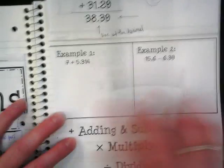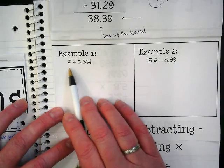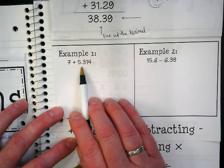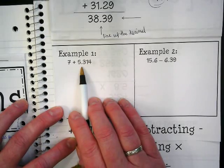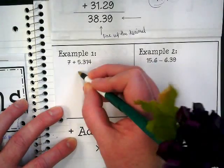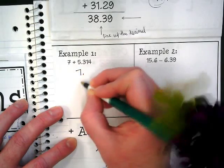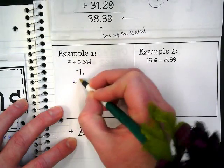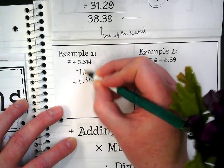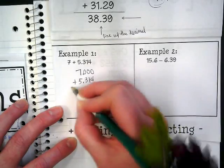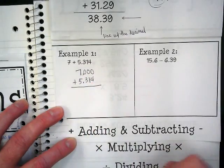So let's take a look at this example one. We have the whole number 7 added to 5 and 314 thousandths, or 5.314. If we put 7 point plus 5.314, we have to put three zeros here to cover those three places that are after the decimal up here.